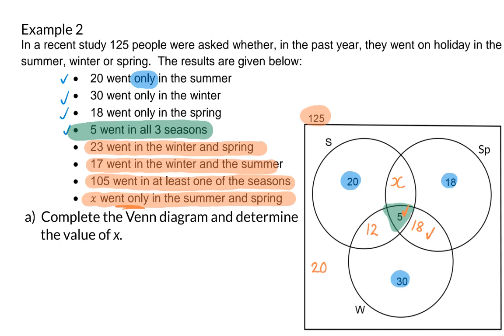Using our complete Venn diagram, we can now calculate the value of X. We know that in our circles we have 105 people, and that means 105 is equal to X, plus 20, plus 18, plus 12, plus 5, plus another 18, plus 30. When I now take 105 and subtract all the constant values, you will find that X is 2.